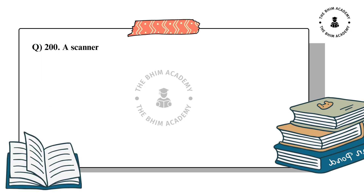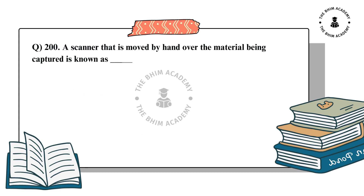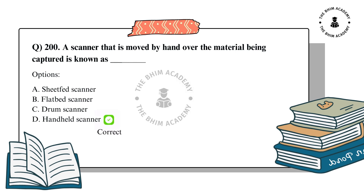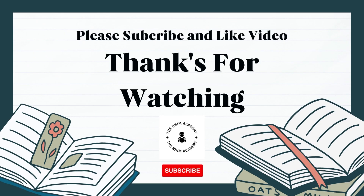Question number 200. A scanner that is moved by hand over the material being captured is known as dash. The options are: A. Sheet fit scanner, B. Flat pit scanner, C. Drum scanner, D. Handheld scanner. The correct answer is D. Handheld scanner. Thank you for watching the video. For more content like this, please subscribe to our channel and like the video.